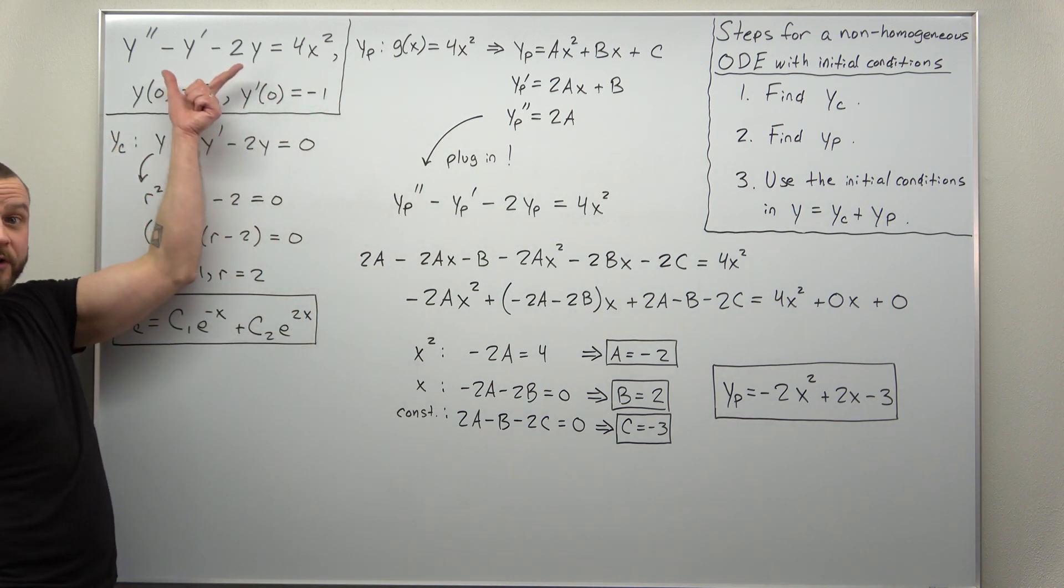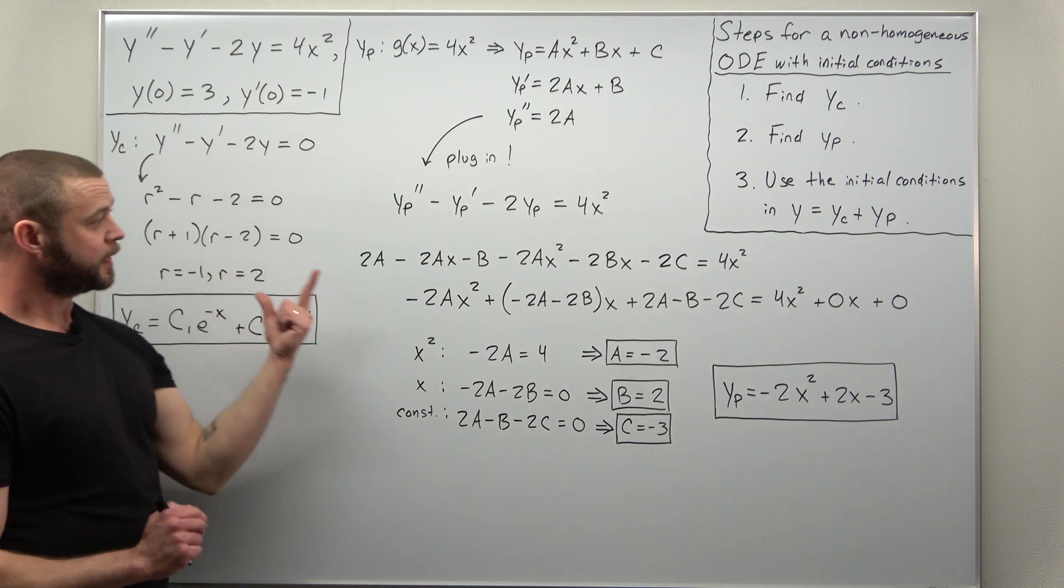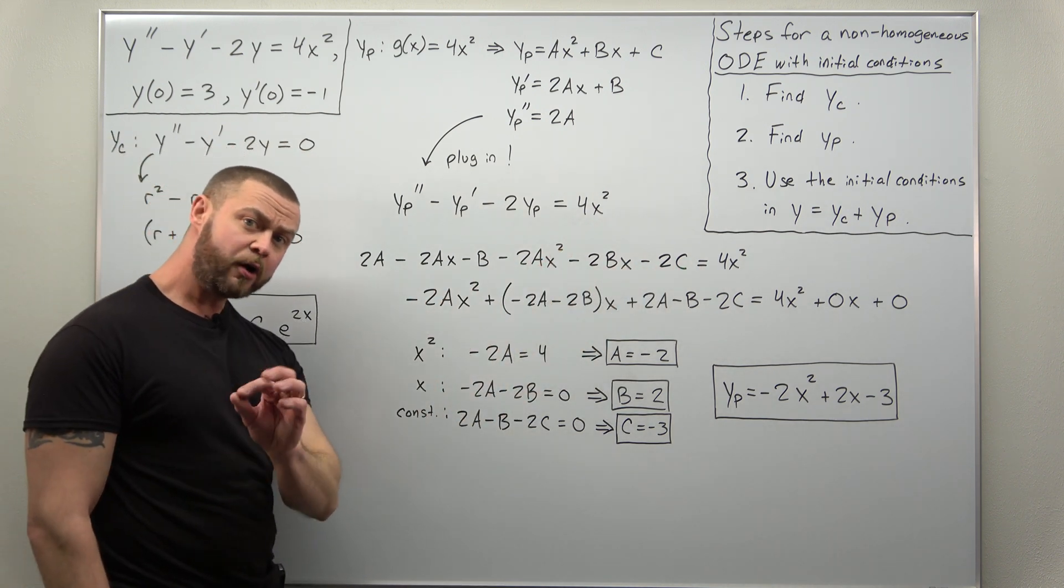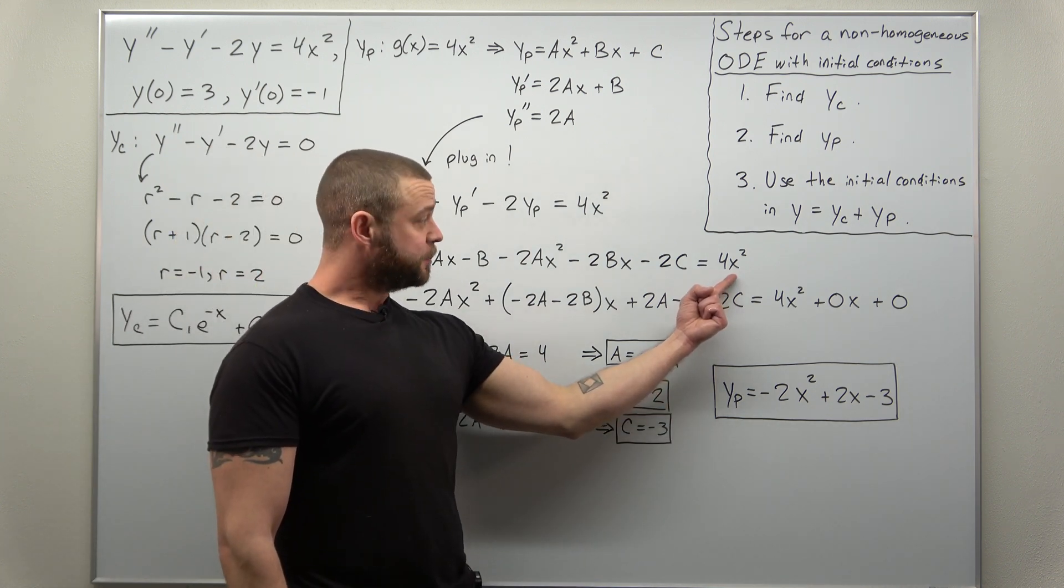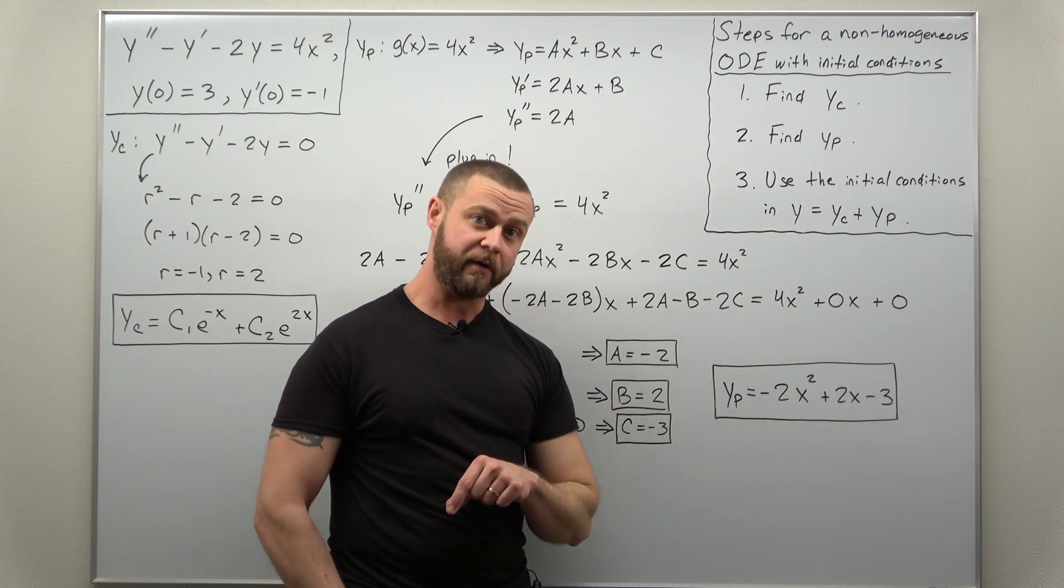Plug into the differential equation, the non-homogeneous differential equation. Collect your like terms. And the trick I always like to do, we have powers of X, but we're missing some of them. So include them with zero coefficients.